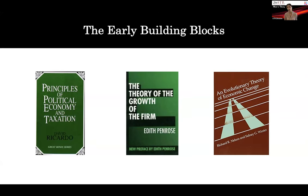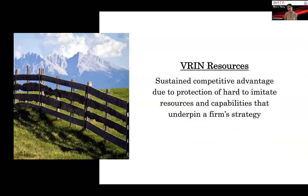With this background, strategic management research has really thought about resources and capabilities in connection to the fundamental question of strategy: how do you achieve and maintain competitive advantage? Thinking about VRIO resources — as ways in which you can protect hard-to-imitate resources that underpin a firm's strategy and build fences around what you have — has been promoted by Jay Barney, Margie Peteraf's work around immobility of resources, and many others who have contributed to this line of thought.